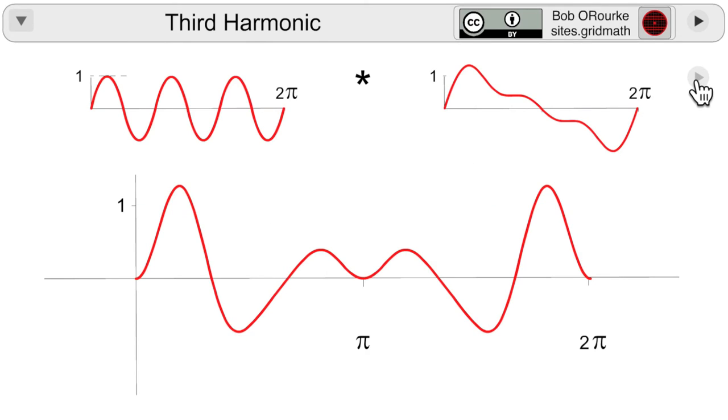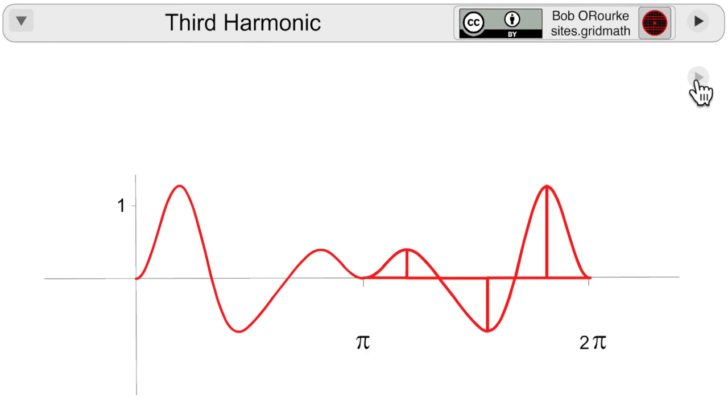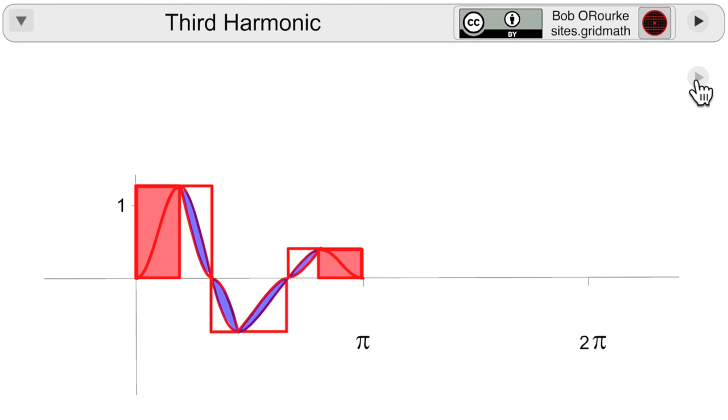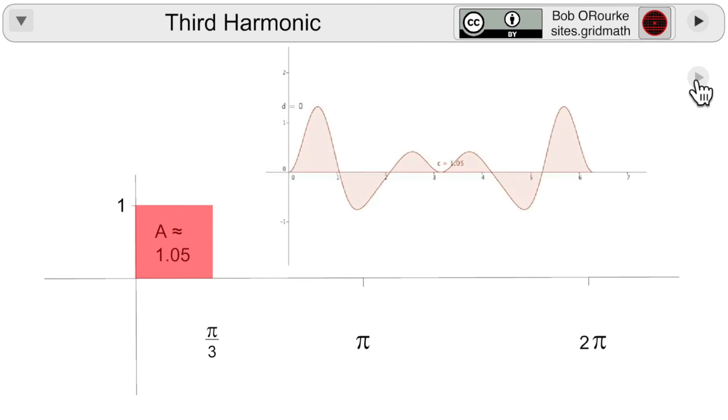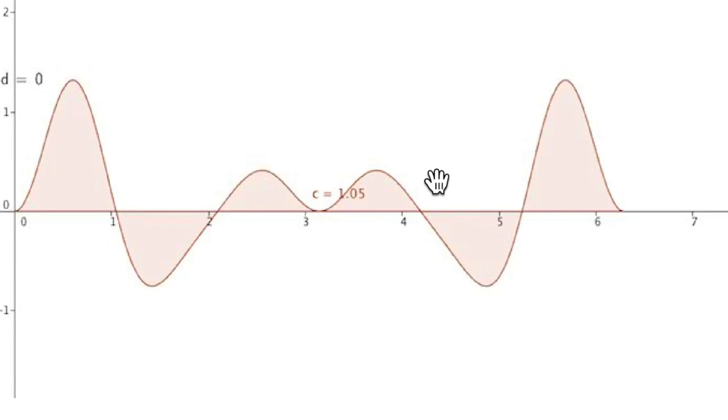And proceeding with the third harmonic, you get a still more complex resultant wave with a number of positive and negative areas. Using a little bit of visual estimation and summing them all up, you will get an area of 1.05. Again, confirmed with GeoGebra.